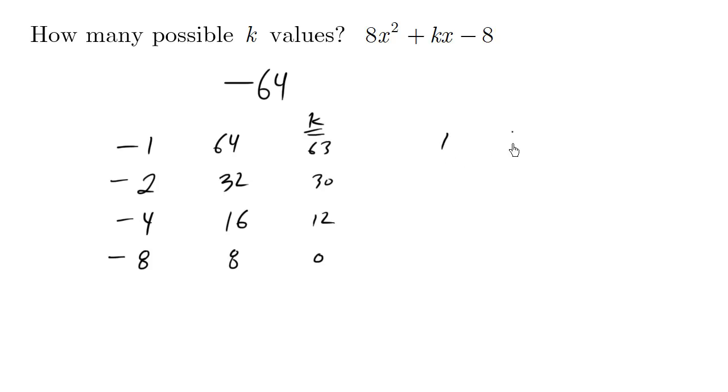Now what if we took these numbers again? 1, 64, 2, 32, 4, 16, and put the negative sign here. You can see that we get k values that are reversed. Instead of positive, they'd all be negative now.